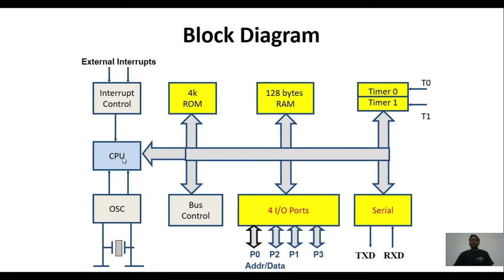The CPU is 8-bit, so it can perform operations on 8-bit data at a time. We also have interrupt control. Interrupts are generally used to stop or interrupt the CPU to do some extra work by pausing the main program. Whenever an interfaced external peripheral needs servicing, it can interrupt the CPU. There are different external and internal interrupts available for 8051.